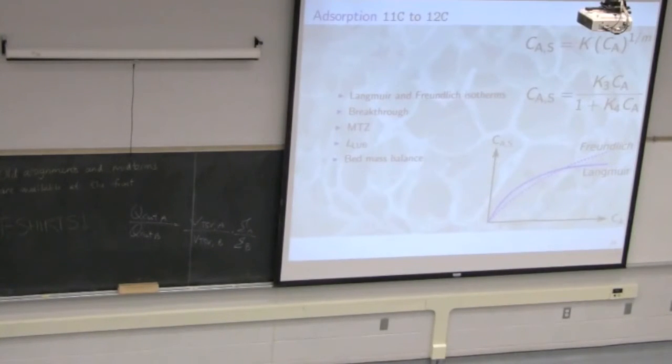We spent I think four classes then on adsorption. This is the solid-fluid separation and different types of isotherms. The isotherm tells me my relationship between CA, the concentration in the environment, versus CAS, the concentration on the solid. By definition, an isotherm is at equilibrium. We looked at concepts regarding breakthroughs, what the mass transfer zone is, what the length of unused bed looks like, or how we can calculate it. The bed mass balance was the final class. We did a mass balance over the bed, and when we do that, we can calculate how long should my bed be to get a given breakthrough.